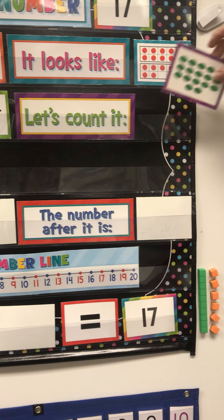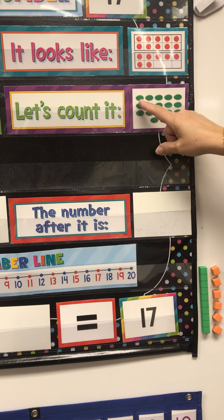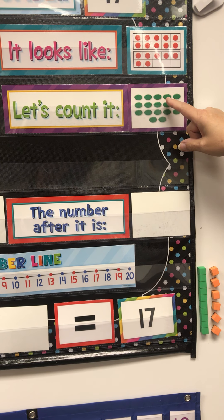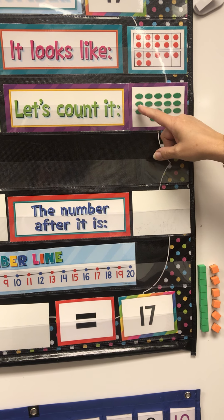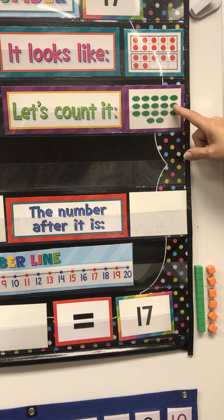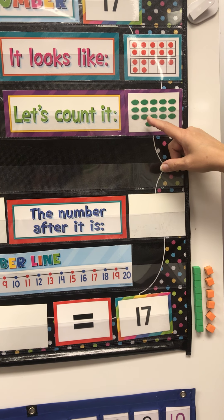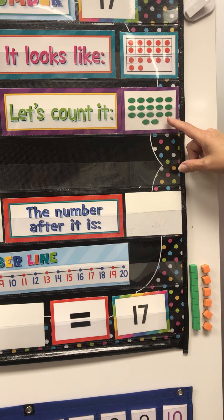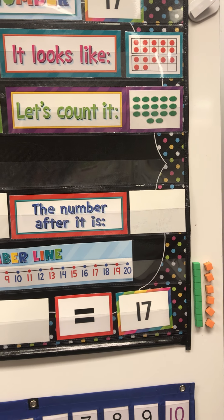And now let's count 17. One, two, three, four, five, six, seven, eight, nine, ten, eleven, twelve, thirteen, fourteen, fifteen, sixteen, seventeen.